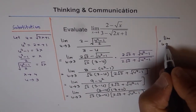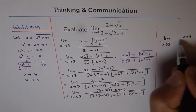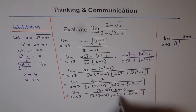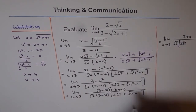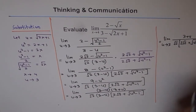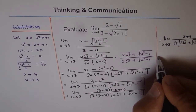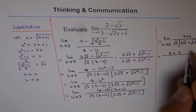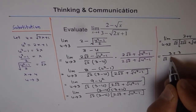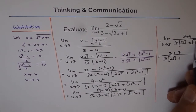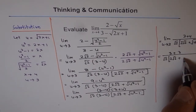We write the limit as u approaches 3 with (3 plus u) in the numerator, divided by square root 2 times the bracket (2 square root 2 plus square root of u squared minus 1). Substituting u equals 3 gives us 3 plus 3 in the numerator, and in the denominator square root 2 times (2 square root 2 plus square root of 3 squared minus 1).